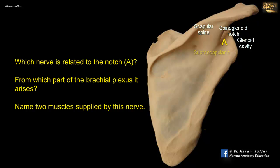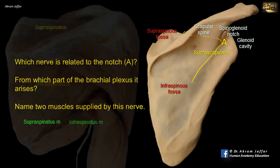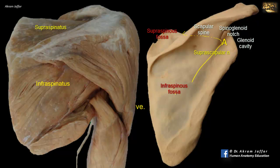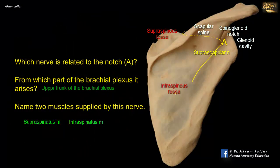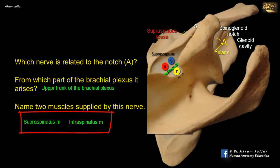The nerve is the suprascapular nerve. As it arises in the supraspinous fossa, it supplies the supraspinatus muscle, then curves through the spinoglenoid notch to reach the infraspinous fossa where it supplies the infraspinatus muscle. The suprascapular nerve arises from the upper trunk of the brachial plexus and is accompanied by suprascapular vessels in this course.